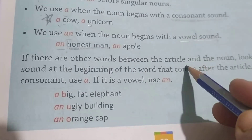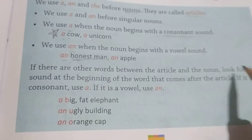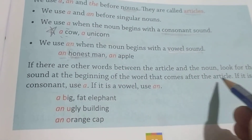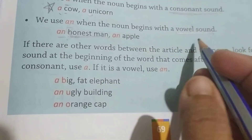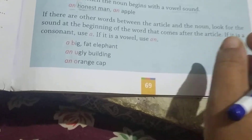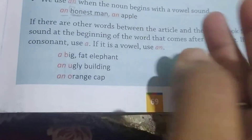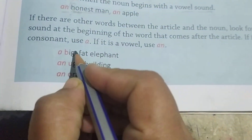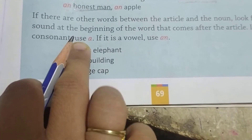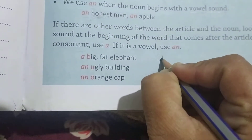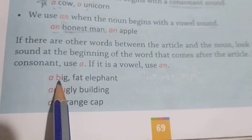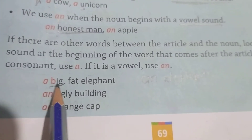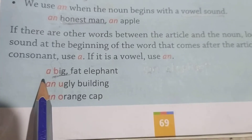If there are other words between the articles and the nouns, look for the sound beginning with the word that comes after the article. If it is a consonant, use 'a'; if it is a vowel, use 'an'. Matlab, 'a' aur 'an' noun ke aage lagten hain, lekin agar noun ke aage aur koi word diya gaya hai toh aapko us word ka sound check karna hai. Jaise 'an elephant', but 'a big fat elephant' — 'big' mein 'b' sound hai, so 'a big fat elephant'.